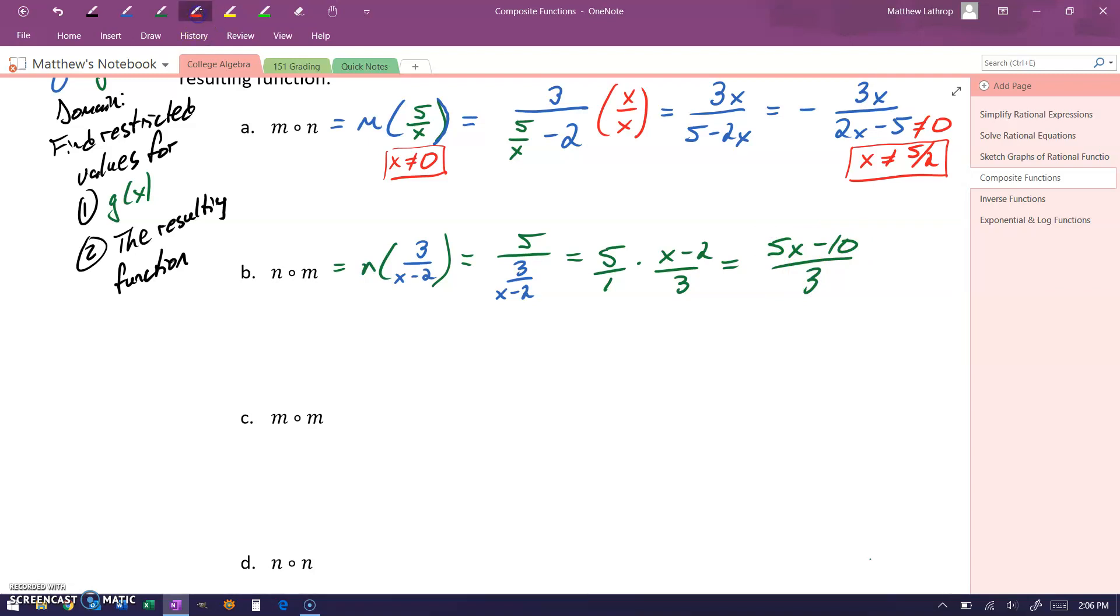That's the resulting composition. We still need to check the denominator to see if there are any cases where that can be equal to 0, but we have no variable, so nothing we need to worry about there. 3 can never be equal to 0.